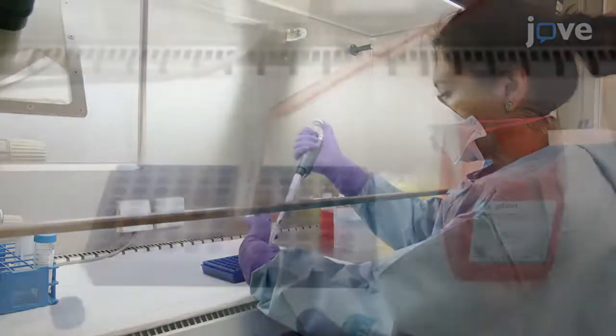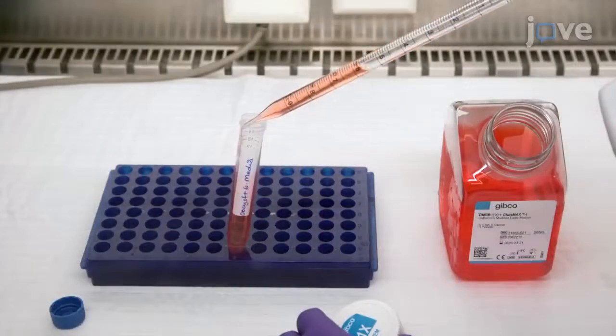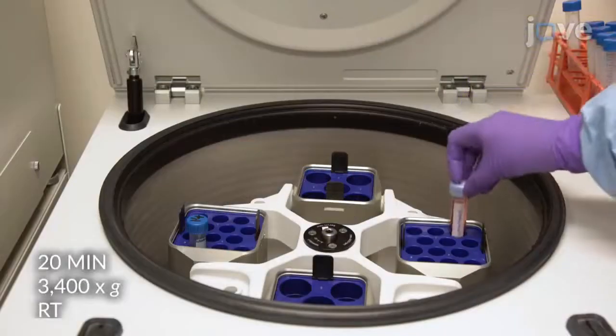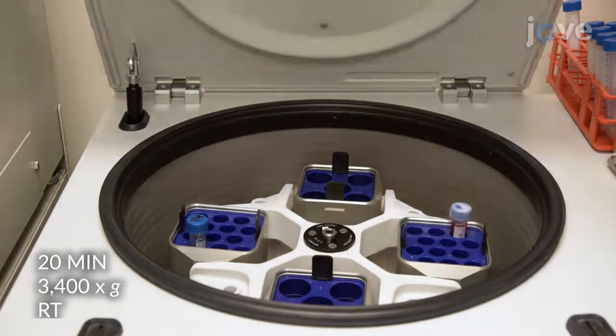After 60-90 minutes at 37 degrees Celsius, mix 14 milliliters of an appropriate wash solution with the oocysts and sediment the cells by centrifugation.